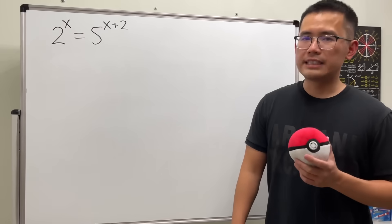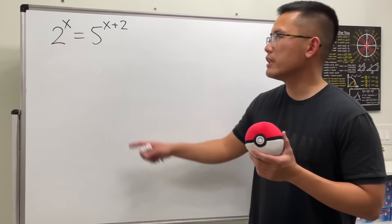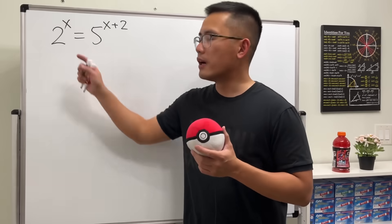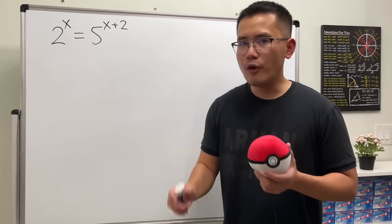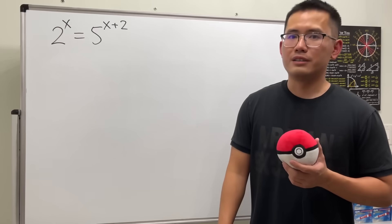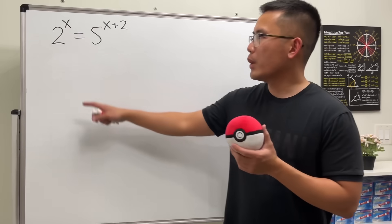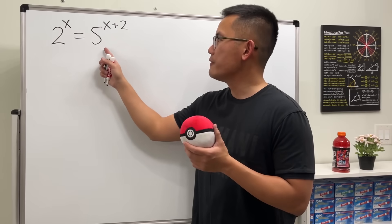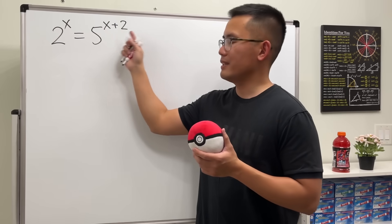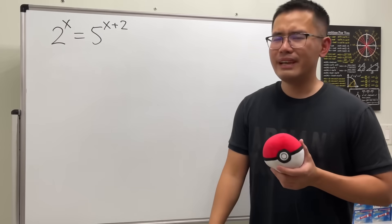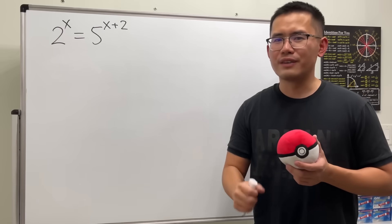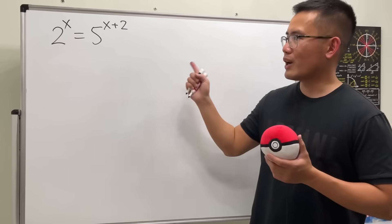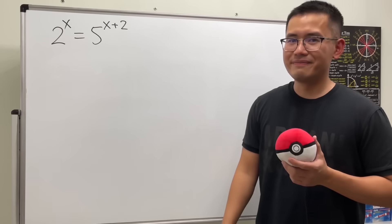How do we solve an exponential equation that has two parts and both bases are different? Here we have 2 to the x, that's equal to 5 to the x plus 2. Please pause the video and try this first.